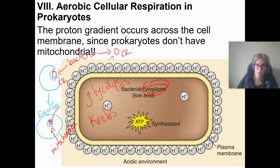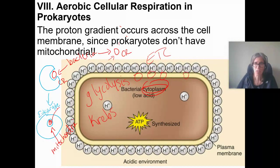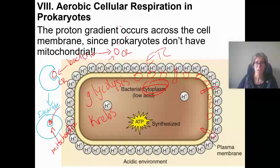The electron transport chain happens in the inner mitochondrial membrane in eukaryotes. But bacteria don't have mitochondria — they actually are more like mitochondria than our cells are. They have the electron transport chain in their only membrane. They don't have any internal membranes, so their electron transport chains are right in their only membrane. The ATP synthase molecule is also embedded in that same membrane.